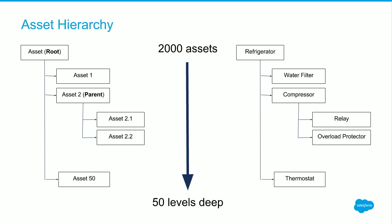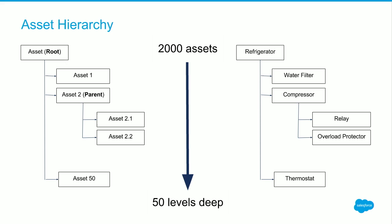So to the left, you can see that the refrigerator is the root. You have the water filter, you have the compressor, which in turn — even though it's a child of the refrigerator — also has the relay and the overload protector as children within the compressor. You can think about all the different complex scenarios that it is now possible to model within the platform. One thing to note is that this hierarchy can go 50 levels deep, and one root can have up to 2,000 assets under it. We are hoping that should be sufficient to model most of the products out there.